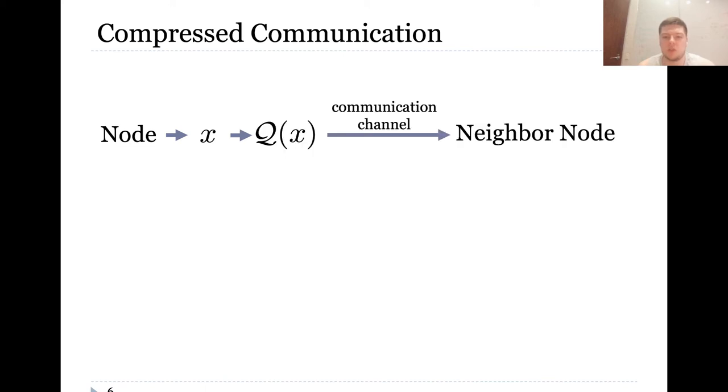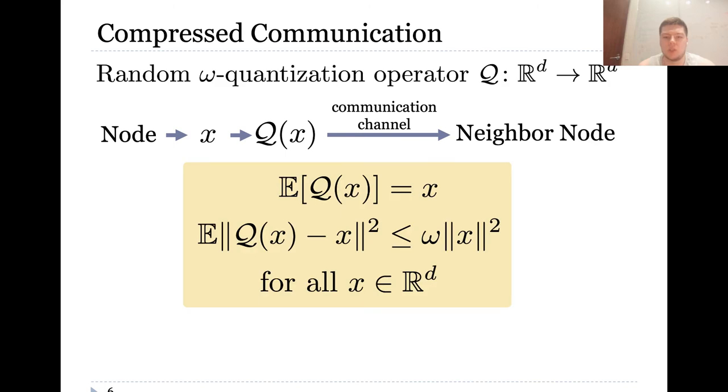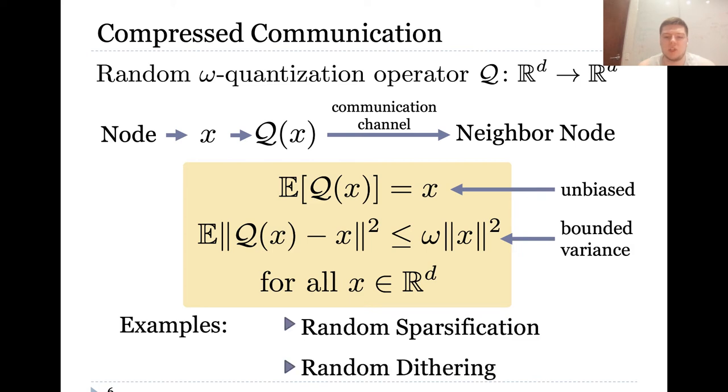Communication is the main bottleneck in distributed training systems which we tackle with compressed communication. In particular, each node applies random compression operator Q to each vector it wants to send to the neighbor which we call omega quantization. This operator is unbiased and has bounded variance. Examples include but are not limited to random sparsification and random dithering.